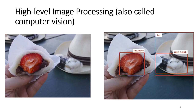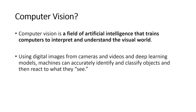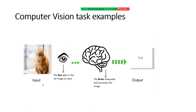Computer vision is what we are waiting for. It is a field of AI that teaches the computer to interpret and describe the visual world. The input is the image and the output is the description — for example, 'this is a cat' or 'this is a dog.'